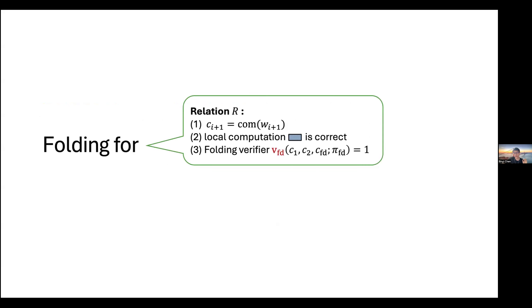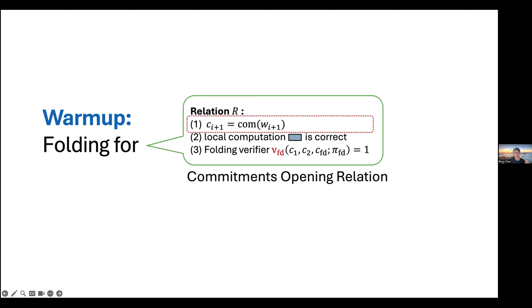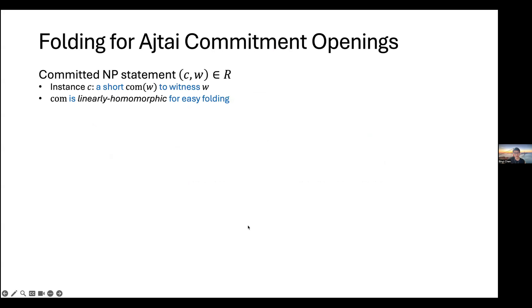Now let me go to the technical part and see how we build a folding scheme for the NP relation enabling IVC. For simplicity, I'll focus on folding the commitment opening relation — checking that the witness is a correct opening to a commitment. The first question is what kind of commitment to use. We want commitments that compress a long witness into a short string and are linearly homomorphic. This leads to SIS-binding commitments — also called SIS collision-resistant hash functions.